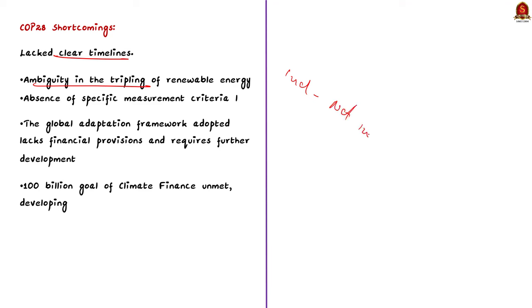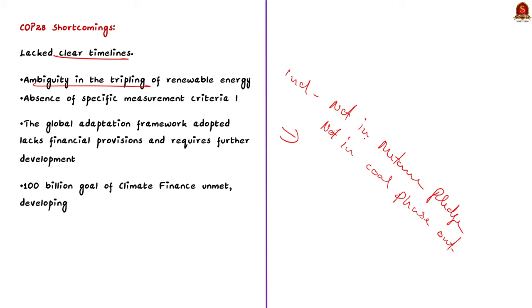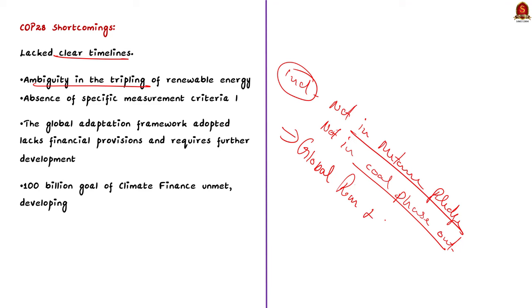Azerbaijan and Brazil will host COP29 in 2024 and COP30 in 2025 respectively. Regarding India's stance on climate initiatives: India stands firm on not phasing out coal-generated electricity in the near term. India has continuously opposed the Global Methane Pledge due to concerns about effects on agriculture and electricity supply. India did not join the Global Renewable Energy Efficiency Pledge at COP28. Both China and India refused to contribute to the Loss and Damage Fund, citing historical responsibility and objecting to the World Bank's temporary management.